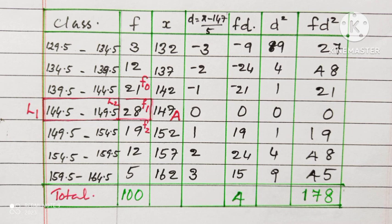For finding standard deviation, we have to find d squared and fd squared. d squared we get by multiplying d into d. Minus 3 into minus 3 equals 9. After that, finding the product of f into d squared. The sum of fd squared is 178.